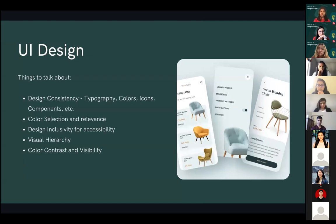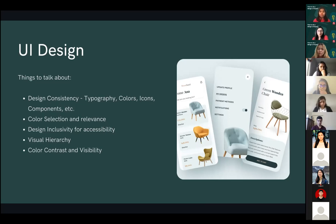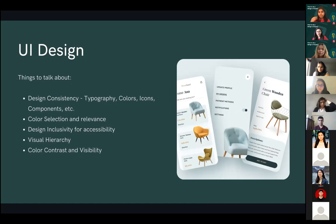Next, talk about UI design: how the design is consistent across screens, typography, colors, and icons. Do the colors signify something — for example, green for eco-friendly? Consider color selection and relevance, design inclusivity and accessibility — is it accessible by everybody? How is the visual hierarchy? Are you able to focus on the right things and find relevant information in a quick glance? Also consider color contrast and visibility — is it too low? Could colorblind people have trouble, or could the screen be hard to read in bright sunlight? Take time, pause, analyze, and then speak.